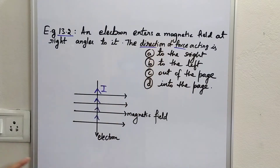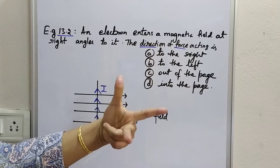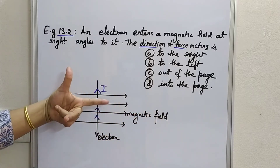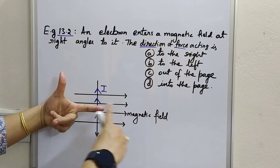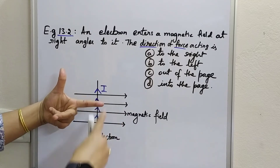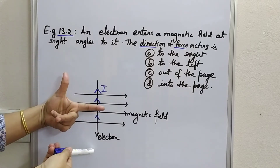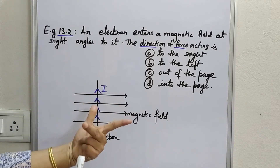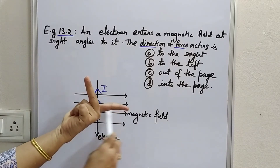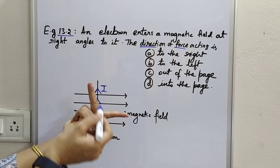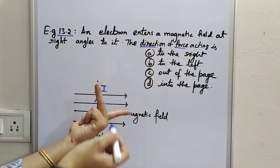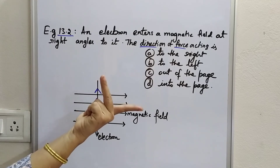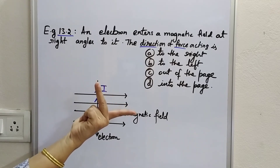We have to find the direction of force using Fleming's Left Hand Rule — force, field, current. First, I set the field: the forefinger is placed in the direction of the magnetic field. Current is bottom to top because the electron moves top to bottom. So the forefinger is along the magnetic field, the middle finger is along the direction of electric current, and then the thumb gives the direction of force.